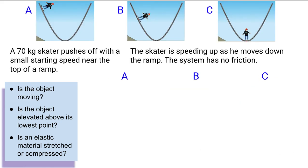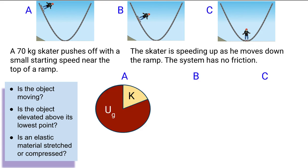Let's look at one more example. Here we have a skateboarder at position A pushing off with a small starting speed right at the top of a ramp. So is the object moving? Yes, because the problem says there's a small starting speed. So there's going to be some kinetic. Is the skater above the lowest point? Absolutely. The lowest point is seen here in figure C. So it's above that point. So there's going to be gravitational potential energy. Is there some sort of elastic material that's being stretched? Nope. That's not mentioned at all in the problem. So this question is only going to deal with kinetic and gravitational potential energy.